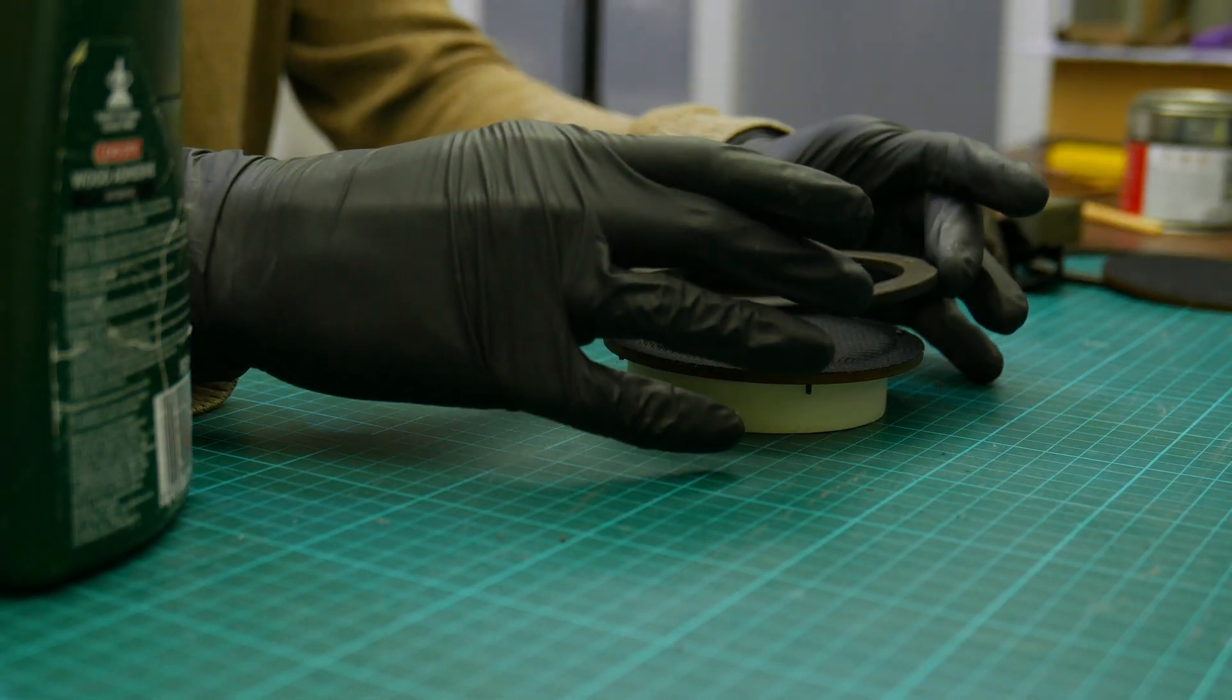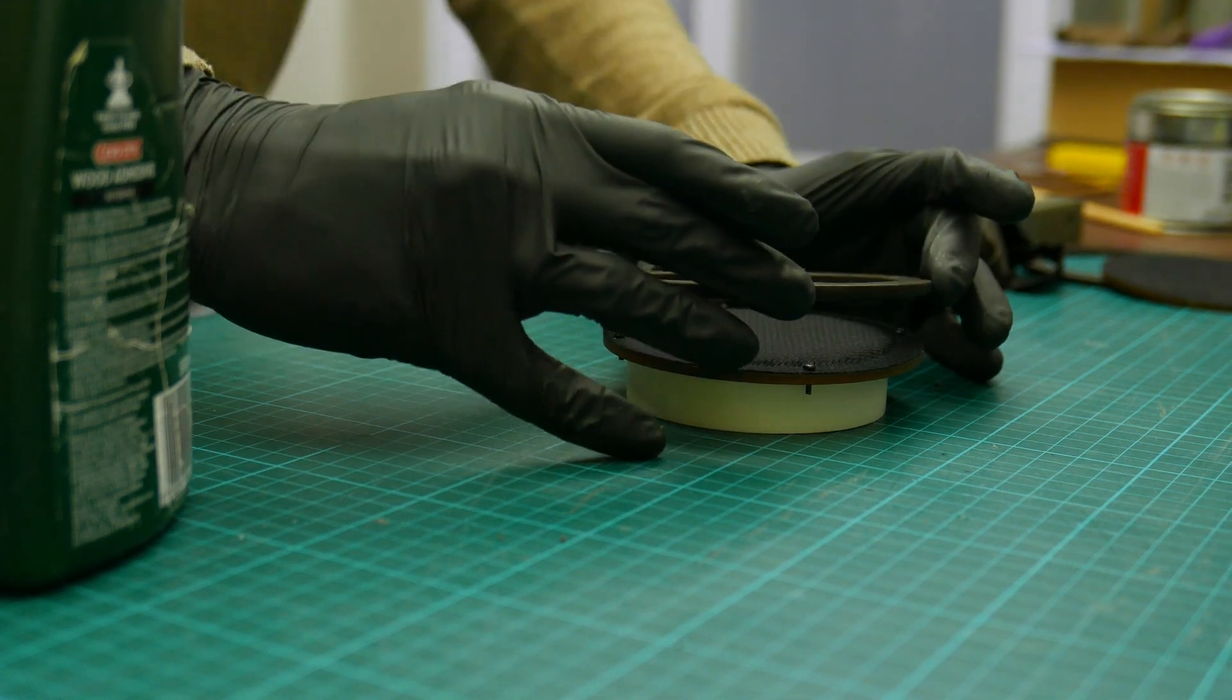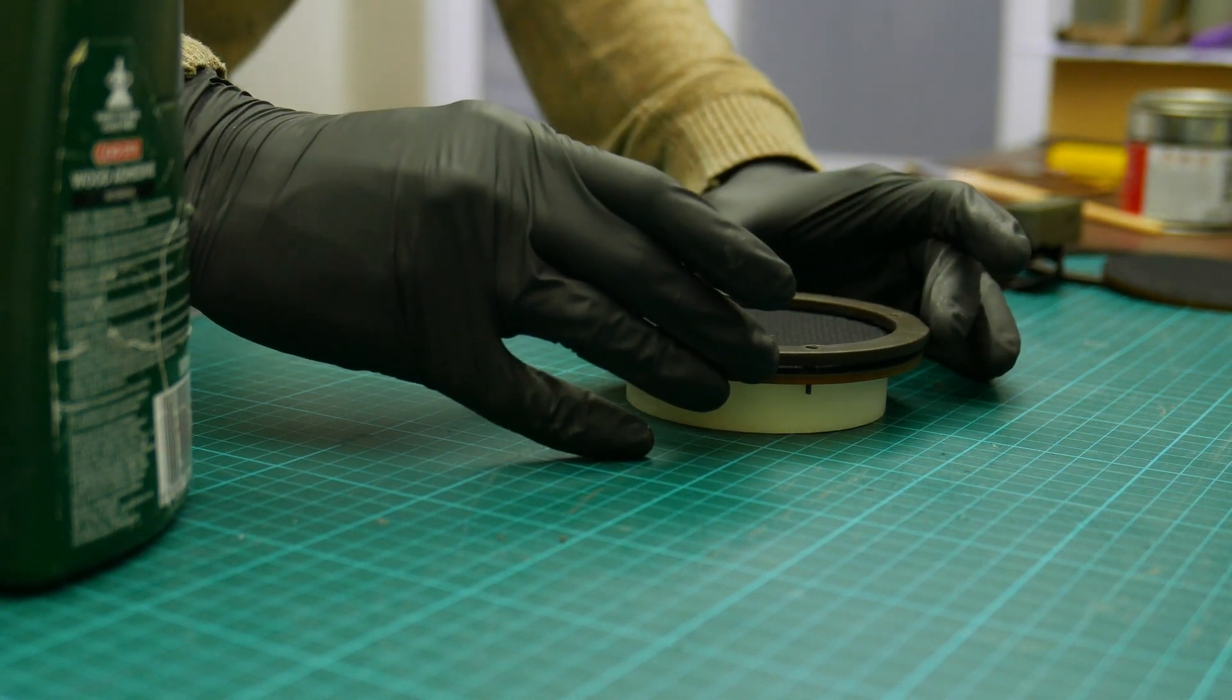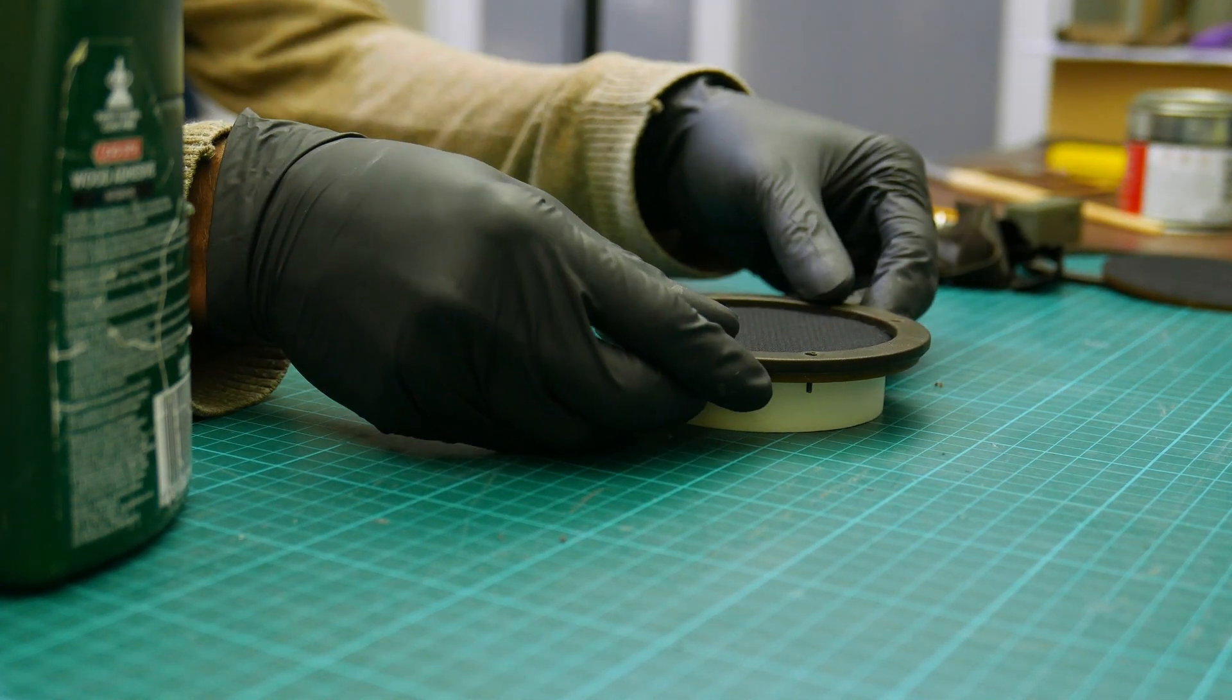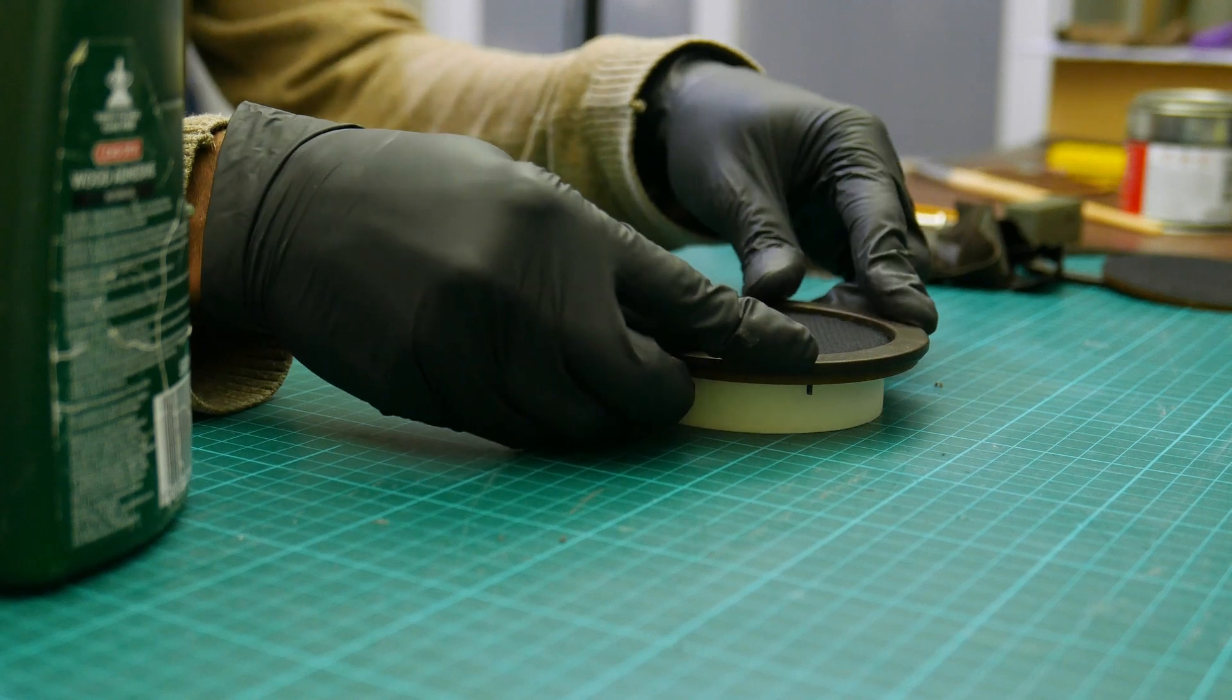Place the front ring on the back plate by making sure the head of the stock screws poke through the holes in the front ring. This ensures the alignment of the front ring to the back plate.